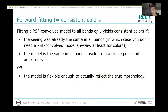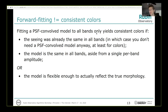Forward fitting of the kind described does not guarantee consistent colors. If you fit a PSF-convolved model, you only get consistent colors if the seeing was already the same in all bands — in which case you're just using your model as an aperture and what matters is that it's the same in all bands with a single per-band amplitude. You can also imagine that a flexible enough galaxy model could fit the true morphology without biases and measure a total color, but that last scenario is completely theoretical and won't be reflected in practice.